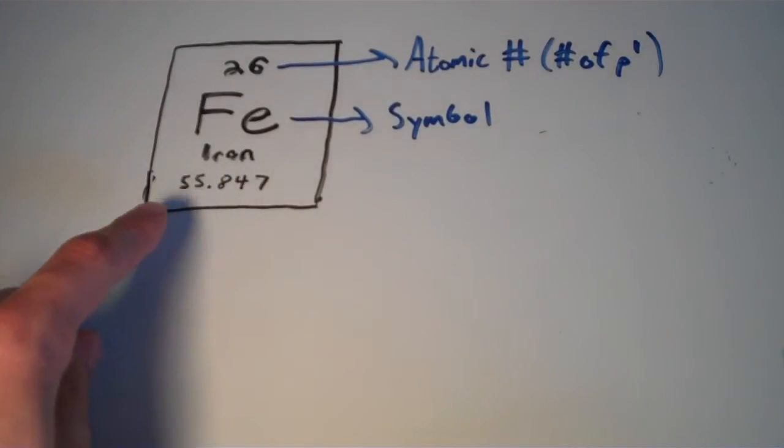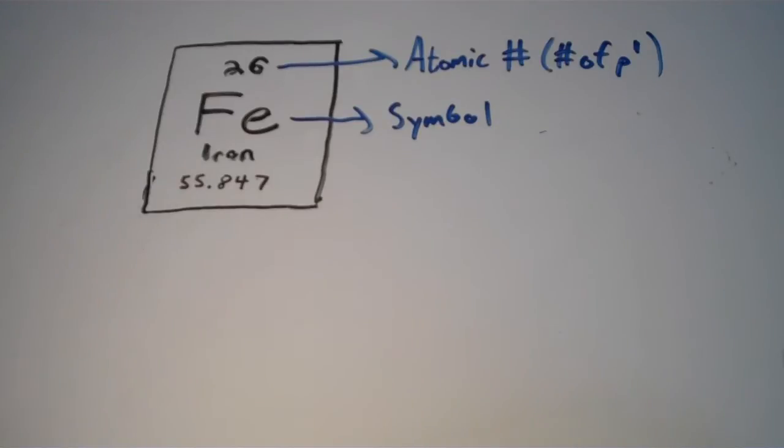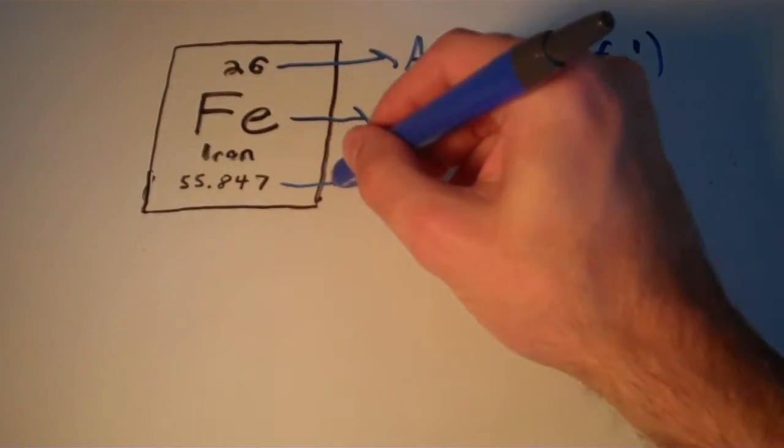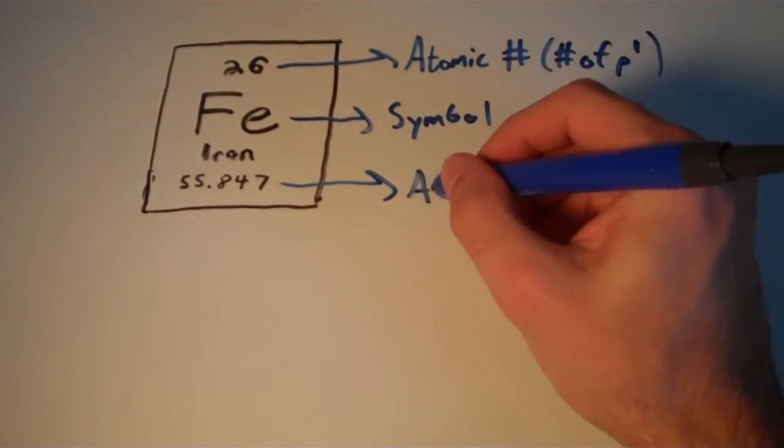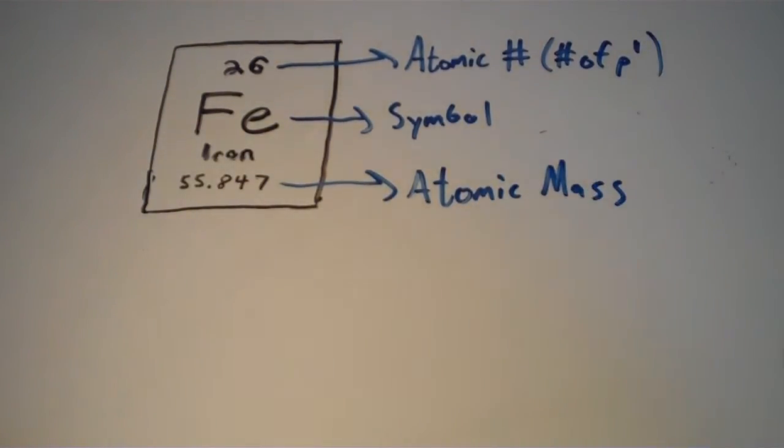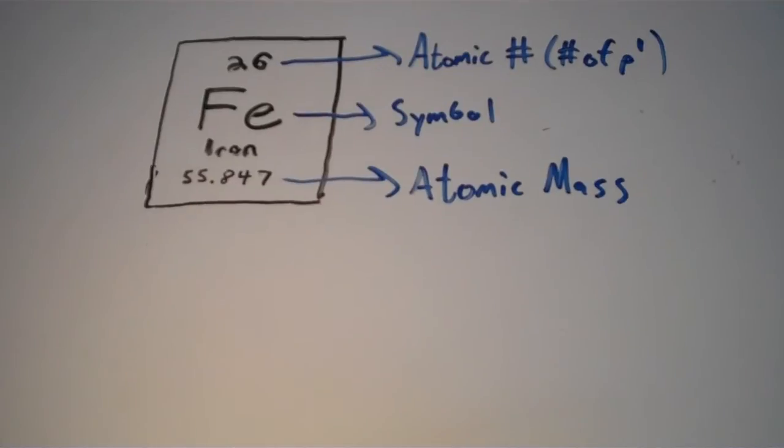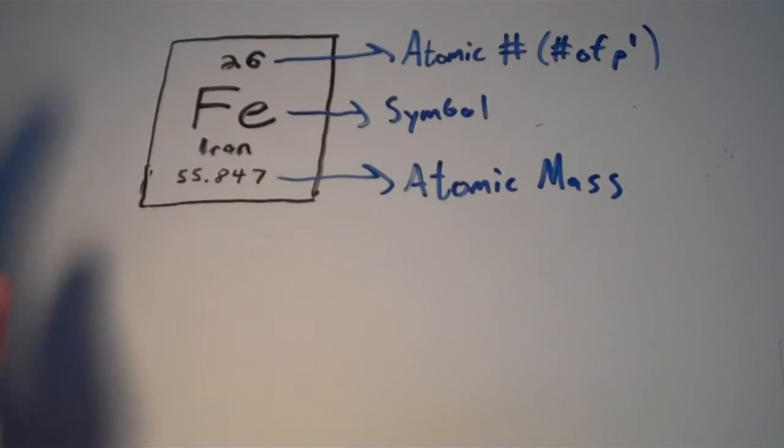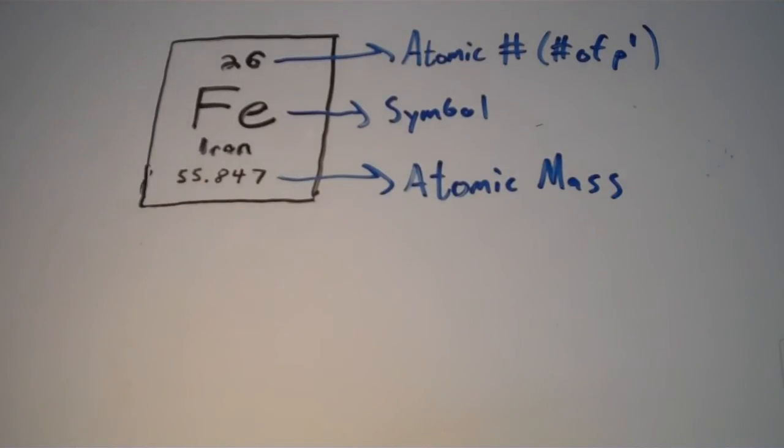This word here, this is just the name of the element. So in this particular case, the name of the element is iron. And this 55.847 number down here, we call that the atomic mass. So each square of the periodic table has at least this information, with the exception of the name. Not all periodic tables have the name in there.